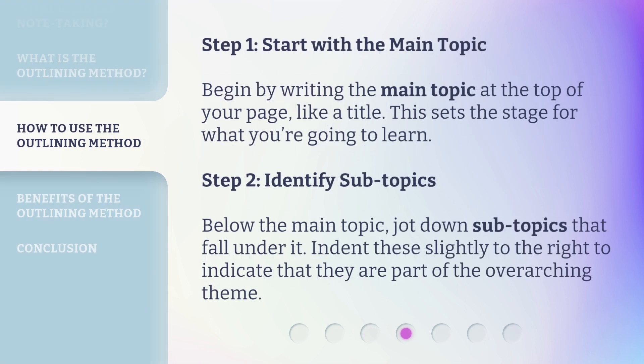Step 1: Start with the main topic. Begin by writing the main topic at the top of your page, like a title. This sets the stage for what you're going to learn. Step 2: Identify sub-topics. Below the main topic, jot down sub-topics that fall under it. Indent these slightly to the right to indicate that they are part of the overarching theme.